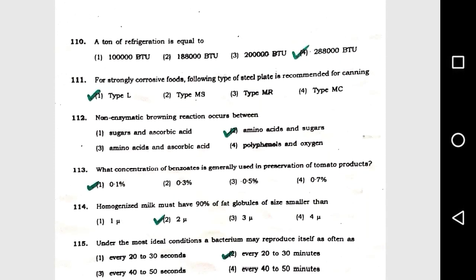Question number 110: A ton of refrigerant is equal to 28,000 BTU. Question number 111: For strongly corrosive foods, the following type of steel plate is recommended for canning: option 1, type EL.